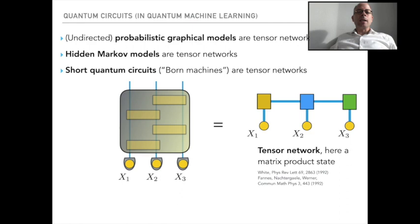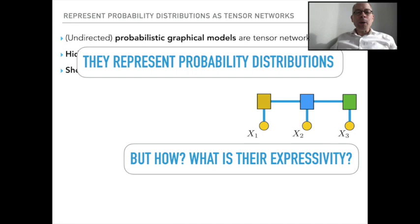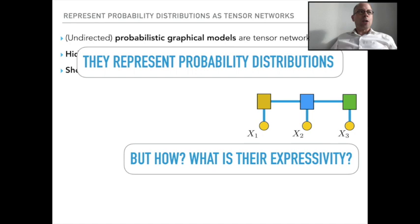Probability graphical models, hidden Markov models, and short quantum circuits — they all give rise to tensor networks. They represent probability distributions and, conversely, tensor networks can give rise to powerful tools to capture probability distributions in the first place. But how precisely? What is the expressive power when we do probabilistic modeling with tensor networks? There are many ways of writing probability distributions in terms of tensor networks, and the question is: what is the respective expressive power of these parametrizations with respect to each other? In other words, how useful are tensor networks in the context of probabilistic modeling?